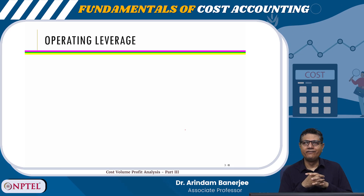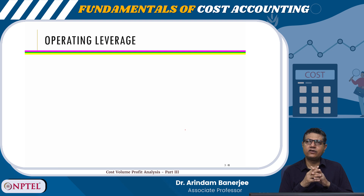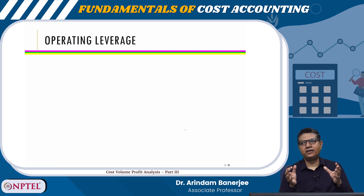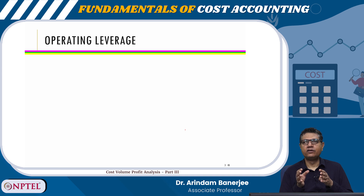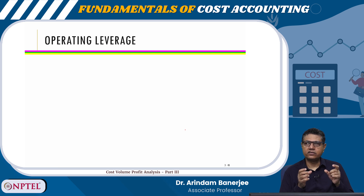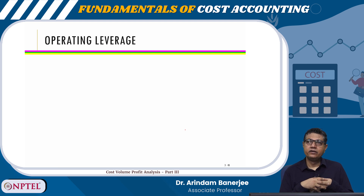The next item is operating leverage. Operating leverage is a phenomenon in which the presence of fixed cost in the cost structure increases profitability. The cost structure can be fundamentally divided into two parts: fixed cost and variable cost. The presence of fixed cost in the cost structure can increase profitability disproportionately because of fixed costs.